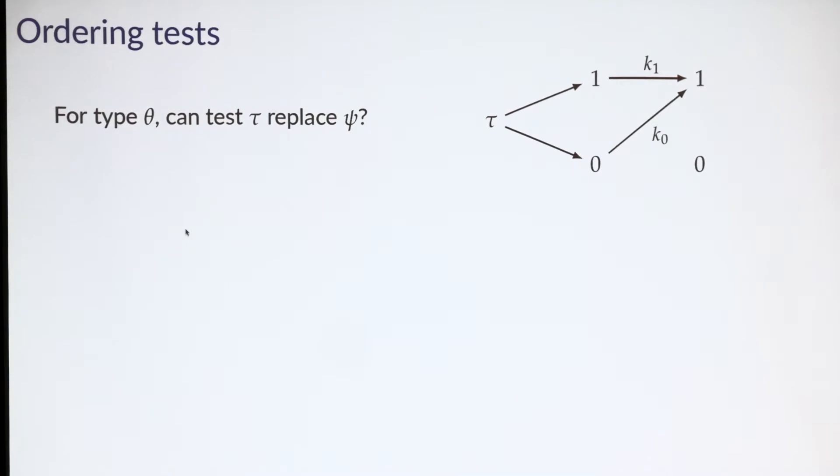This sounds abstract, but the key to thinking about this is to think about a conversion from one test to another. In the US, we think about conversions from an ACT score to an SAT score. Starting with test tau, we want to convert the score on test tau into an equivalent score on test psi, then feed that equivalent score into the decision rule. In our context, these conversions can be stochastic—a conversion is just a Markov transition. I'm specifying it by two probabilities: k1 is the probability that passage on test tau is converted into passage on test psi, and k0 is the probability that failure on test tau is converted into passage on test psi.